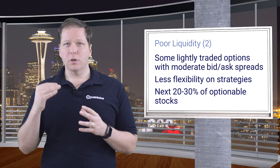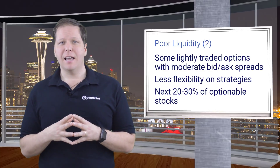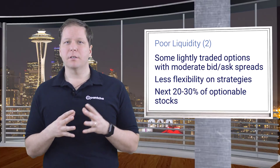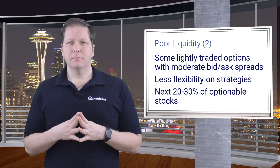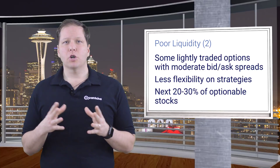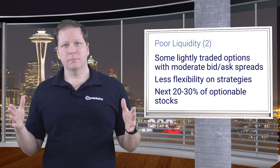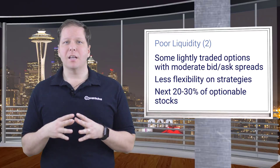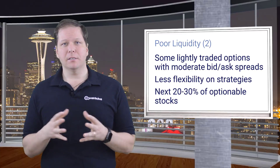As we get into the poor liquidity tier, we find stocks that have some lightly traded options with an expanding bid-ask spread. There will be fewer terms available, and those terms may have wide strike widths. Around 20 to 30% of stocks generally have this rating on a daily basis.